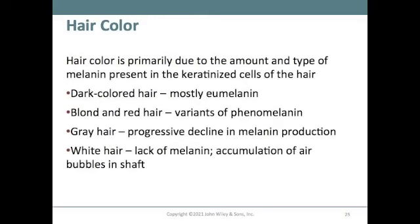Hair color is primarily due to the amount and type of melanin in the keratinized cells of the hair. Eumelanin produces darker hair colors, while variations of pheomelanin produce blonde and red hair. Gray hair results from a progressive decline in melanin production with age, and white hair represents a complete lack of melanin, seen in elderly and albino individuals.